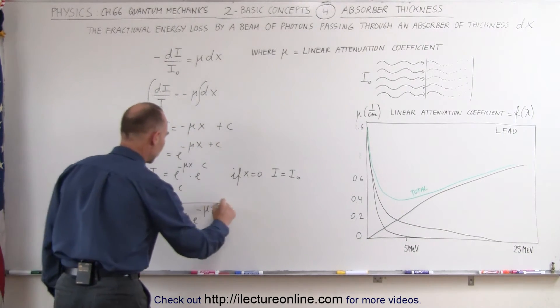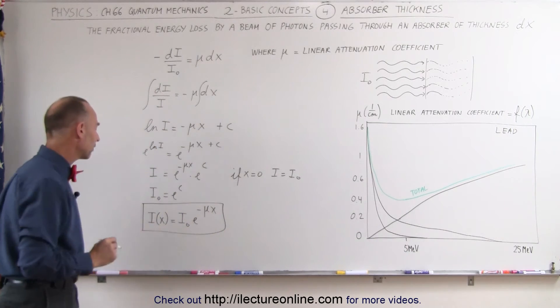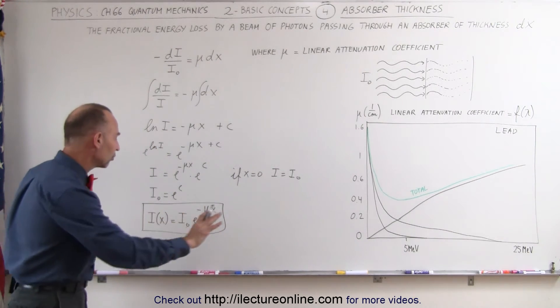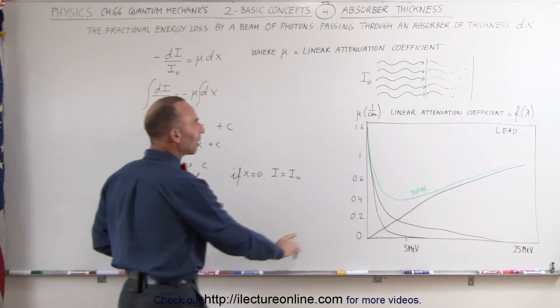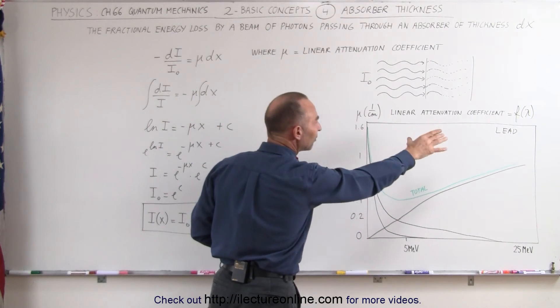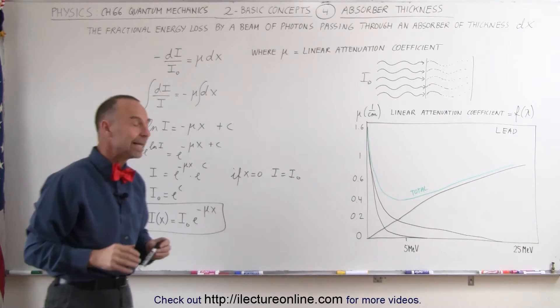So here's the equation that allows us to figure out what the intensity will be after we've passed through a certain beam. Remember that μ depends upon the frequency or the wavelength of the incoming radiation.